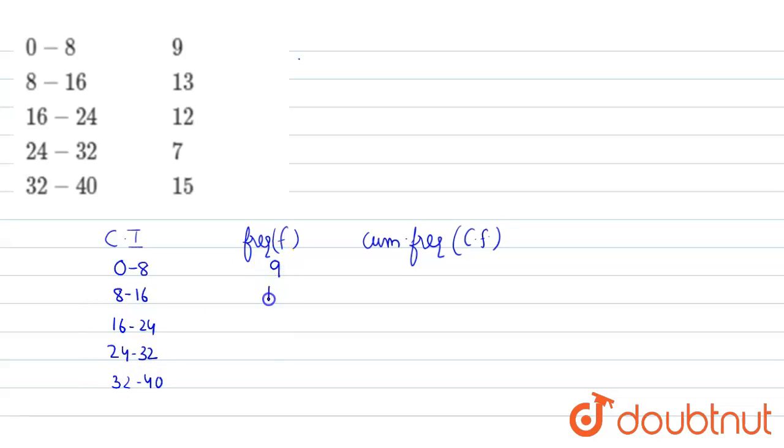Now to find cumulative frequency, what we need to do here is just write first frequency as it is. It will become first cumulative frequency: 9. For second cumulative frequency, just add first and second frequency. That means 9 plus 13, it's 22.